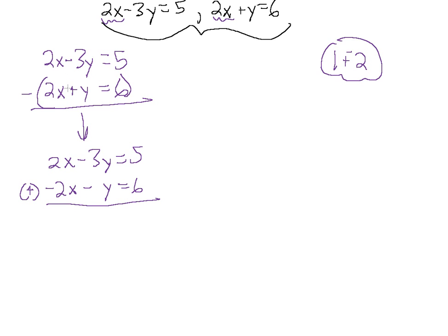Now we've gone from subtracting two equations to adding the opposite, and we have something we can work with. We have 2x minus 2x — those two cancel. Here we have minus 3 minus 1 is minus 4y, and we have 5 minus 6 is minus 1. We can solve for y by dividing both sides by minus 4, which gives us a positive y. The two negatives cancel, so y equals 1 fourth.